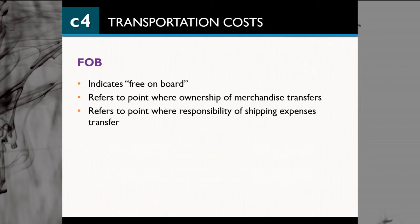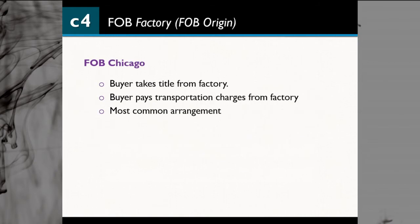The first example of FOB is FOB Factory, also called FOB Origin. If you see this term — FOB Factory or FOB Origin — that means the buyer takes title from the factory. Once it leaves the factory, the buyer takes all responsibility as well as transportation charges. Any losses are also the buyer's responsibility, and the buyer pays all transportation costs. This is the most common arrangement between the vendor and the retailer.